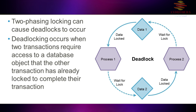Transaction one acquires a lock and then waits for a lock that transaction two has already acquired, and transaction two is subsequently waiting for the original lock of transaction one. So neither one can proceed until they acquire the lock that the other one has.